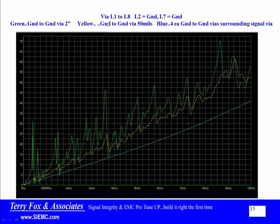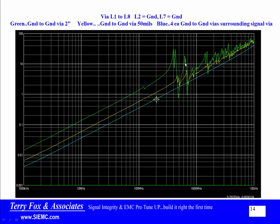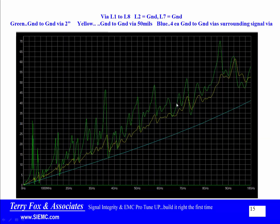Here is the same information on a linear-linear basis. The blue line, with four ground-to-ground stitching vias, looks like a very good signal path. The green shows resonances due to the stitching via being two inches away, and the yellow resonances come from having just one stitching via at 50 mils.